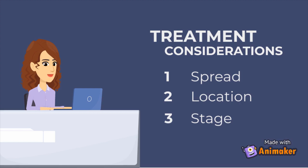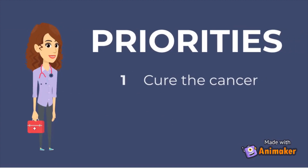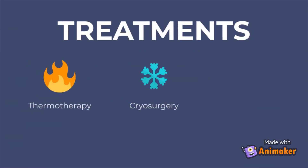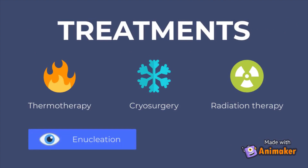Finally, let's take a look at some treatment options. Treating retinoblastoma depends on many factors, including the spread, location, and stage of the tumor. The ultimate goals are to cure the cancer and to preserve vision as much as possible. For early-stage intraocular tumors, local treatments are typically used, including cryosurgery (freezing and destroying the tumor), thermotherapy and laser therapy (heating and destroying the tumor), and radiation therapy (placing radioactive material on the eye). These interventions are often done in conjunction with chemotherapy. As the tumor grows and spreads, it may need to be removed by surgically removing the eye itself, known as enucleation.